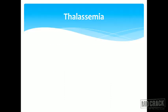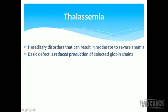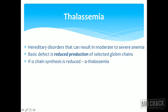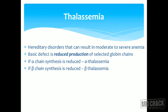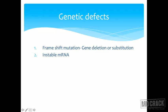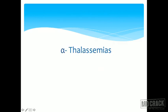Thalassemias are hereditary disorders that can result in moderate to severe anemias. Unlike sickle cell disease, which is a qualitative hemoglobinopathy, thalassemia is quantitative — there is reduced production of a selected globin chain. If the alpha chain is reduced, it is called alpha thalassemia; if the beta chain is reduced, it is called beta thalassemia. Genetic defects can include frameshift mutations, gene deletions, substitutions, unstable mRNA, defects in initiation of protein synthesis, or premature chain termination.